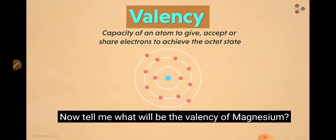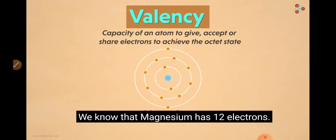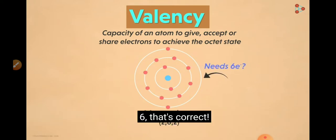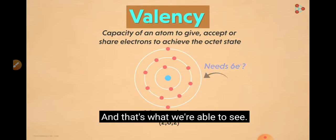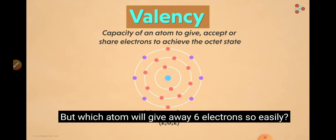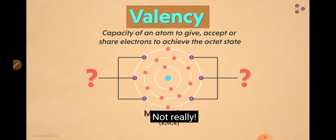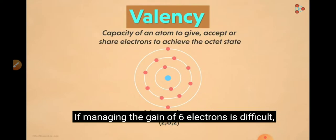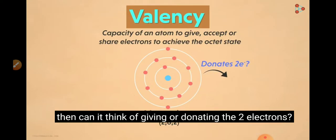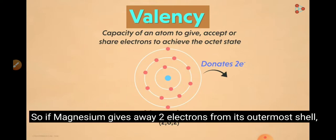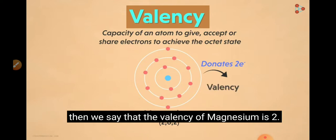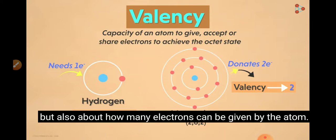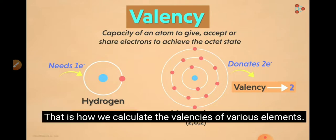Now, what will be the valency of magnesium? Magnesium has 12 electrons, so its electronic configuration is 2,8,2. Six electrons would be needed to complete the octet, but gaining six electrons is difficult. This is where the concept of donating electrons comes in. If magnesium gives away the two electrons from its outermost shell, then we say the valency of magnesium is 2. So it's not only about how many electrons can be taken, but also how many electrons can be given by the atom — that is how we calculate the valencies of various elements.